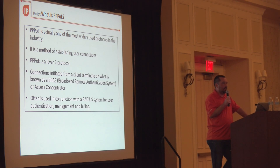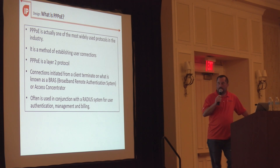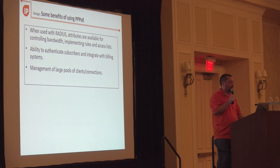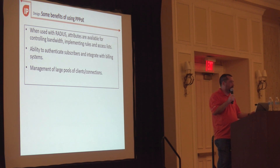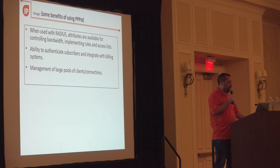PPPoE is a layer 2 protocol. The connection is initiated from the client to either a BRAS or an access concentrator. When you use it with RADIUS, you get a complete package of authentication, authorization, and different options for limiting customer speeds. With RADIUS attributes you can pass down pretty much whatever you want to a client — and especially with MikroTik-specific options, you can do access lists, queues, and many other things.